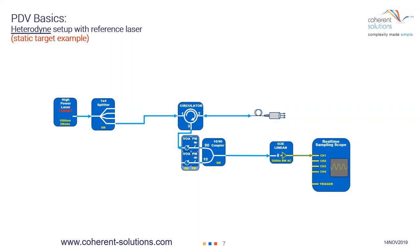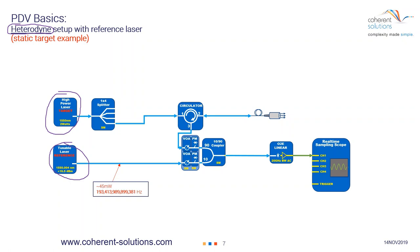Now we're going to move on to what we call a heterodyne example. Instead of having a single laser, we're actually going to have two lasers — the target laser at 1,550 nanometers, and a tunable laser at 1,550.004 nanometers. I chose 1,550.004 because that happens to be approximately 500 megahertz difference in frequency in the optical domain. As we send this through, instead of a single laser that's split, the reference is coming through its own individual channel.